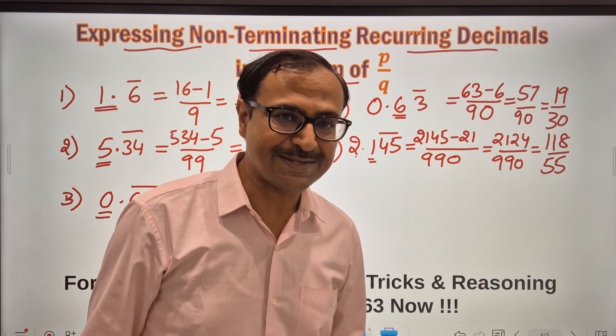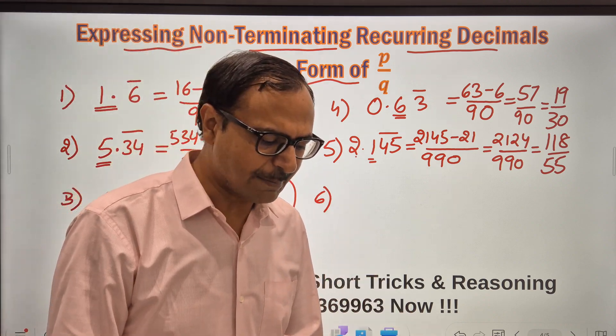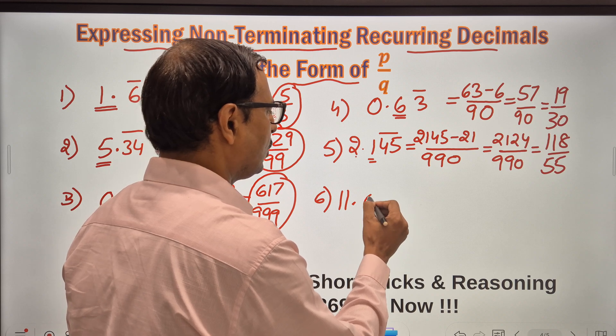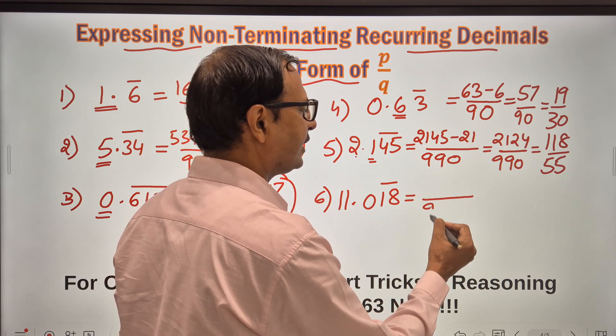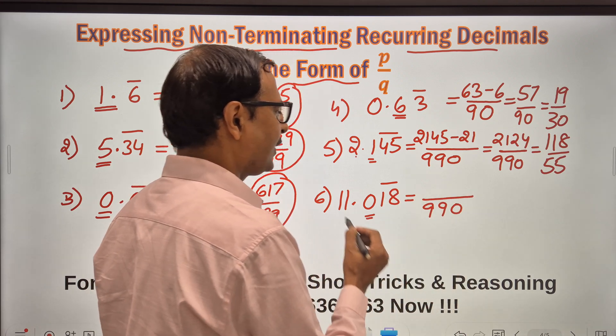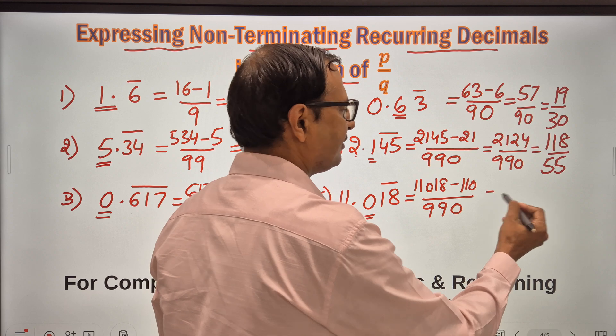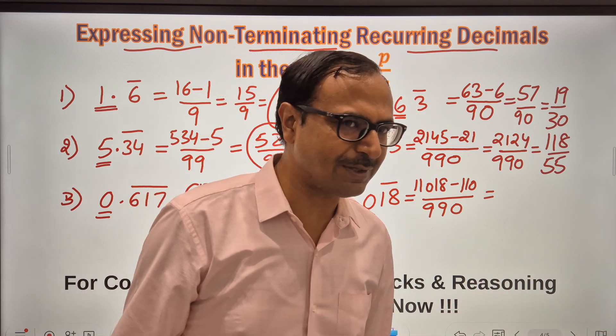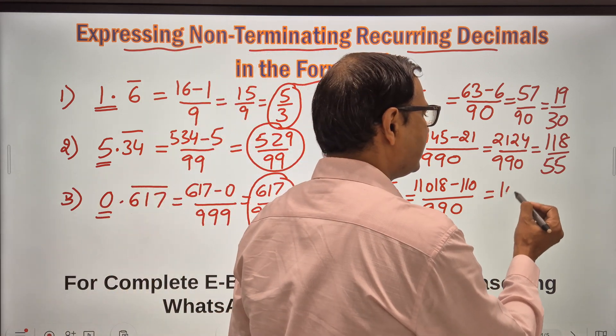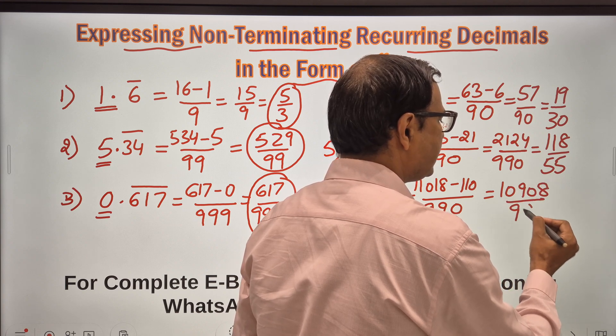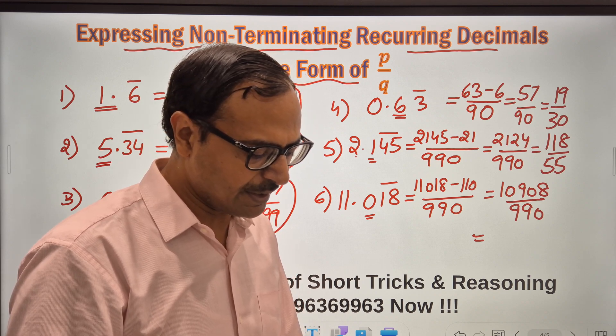Likewise, we can have little bigger examples also, like suppose 11.0 bar 18, with a bar over 18. So similar thing works here also. So 2 digits repeating, 99. 1 digit not repeating, 0. 11018 the complete number, and without bar 110. And you have the answer. So how much time you think you are going to take for this? I think 5 to 7 seconds must be enough. So 10908 upon 990, and you can reduce it to lowest form. It gives you 606 upon 55. That is the answer for this particular question.